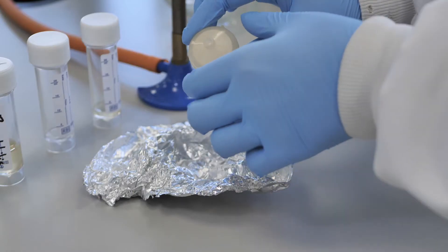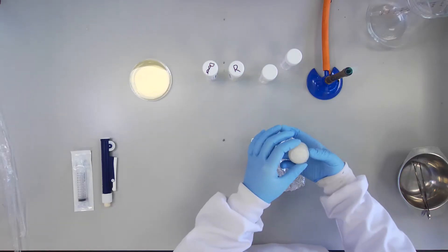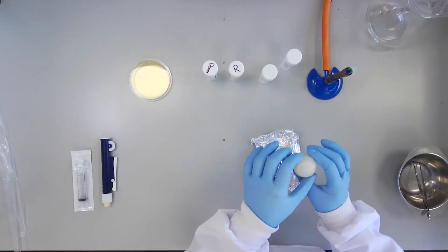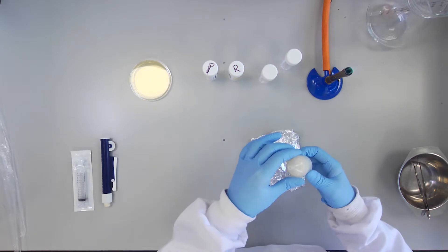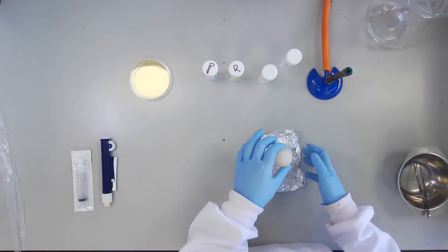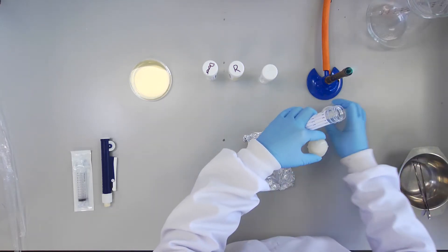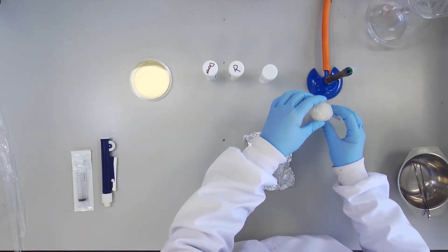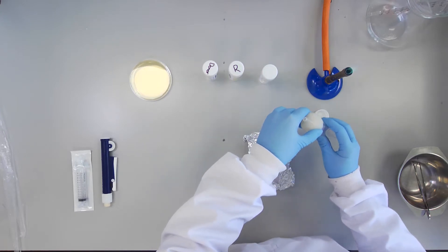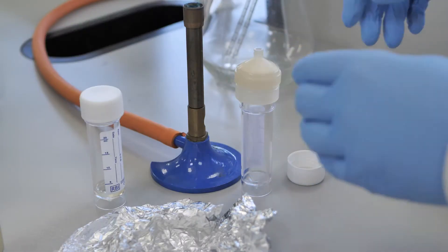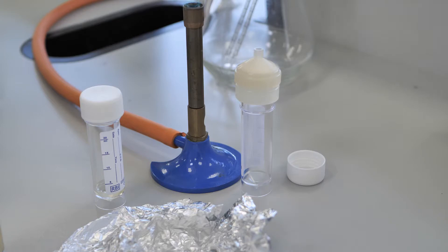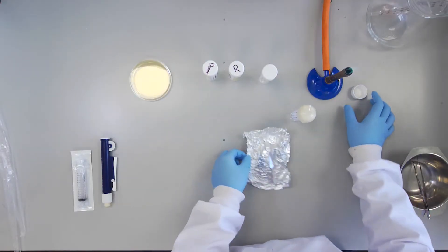Tighten the Swinex filter to ensure there will be no leaks when performing the filtration. Position the Swinex filter on top of a clean universal container. Retain the tin foil for later use.